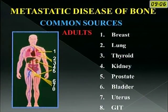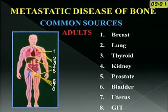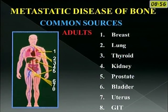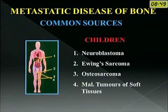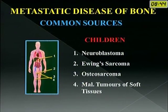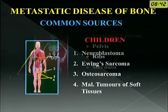As you all know, the common sources of metastasis in adults — the five common sources — are breast, lung, thyroid, kidney and prostate, and also from bladder, uterus and gastrointestinal tract. In children, you can get metastasis from neuroblastoma, Ewing sarcoma, osteosarcoma and malignant soft tissue tumors.